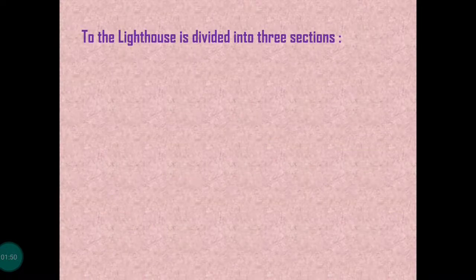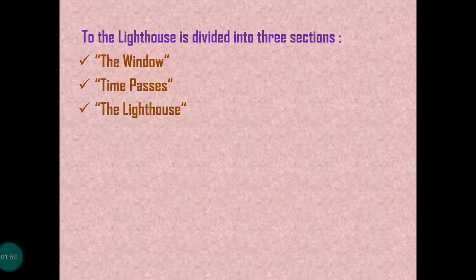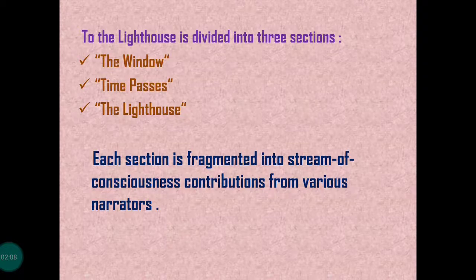To the Lighthouse is divided into three sections. The first is The Window, the second is Time Passes, and the third is The Lighthouse. Each section is fragmented into stream of consciousness contributions from various narrators.